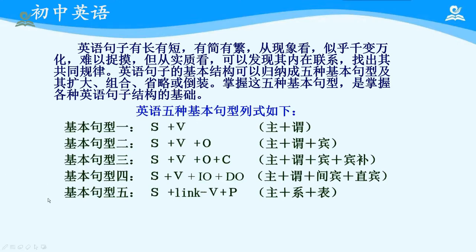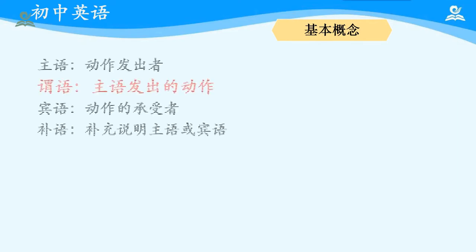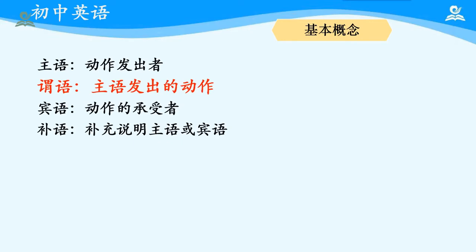请注意这五种基本句型。前四种有共同的特点：句子成分里都共同拥有主谓成分。在学习句子基本结构之前，我们需要弄清楚一些基本概念：主语是动作的发出者，是这句话主要说明的对象；谓语是一句话的核心，也是最重要的成分，是主语所发出的动作；宾语则是动作的承受者；补语是用来补充说明主语或宾语的。